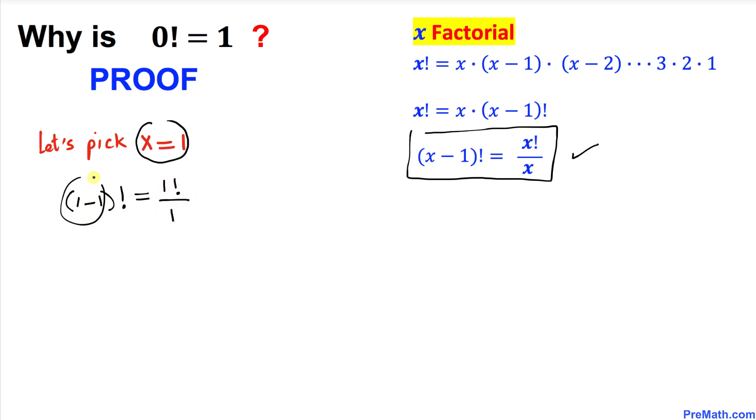Here 1 minus 1 is going to give us 0 factorial equal to 1 factorial. 1 factorial is simply 1 divided by 1. So thus 0 factorial turns out to be simply 1. And that's the end of the proof.